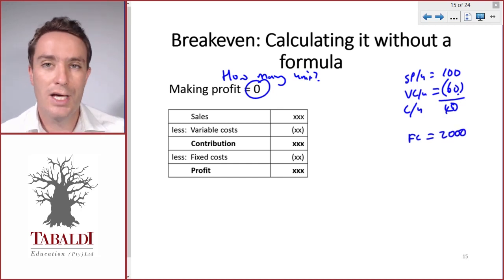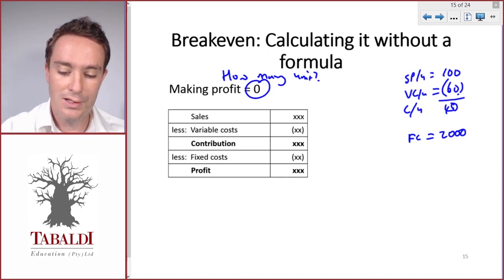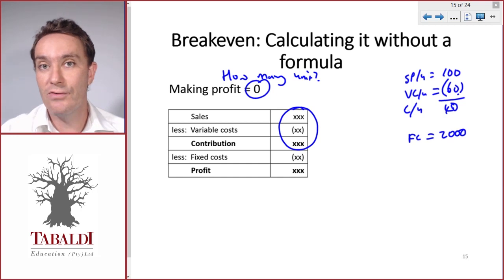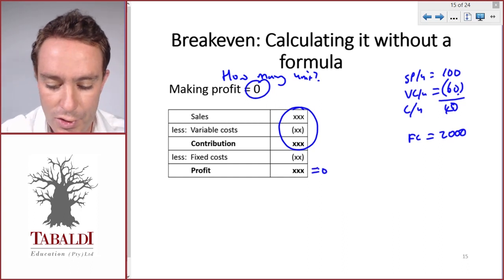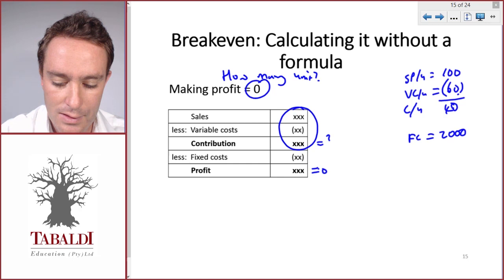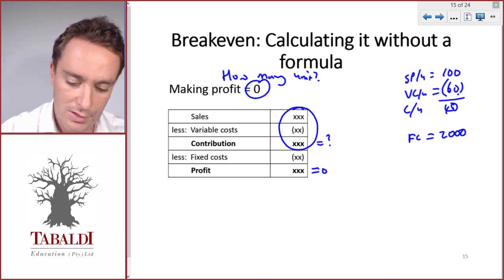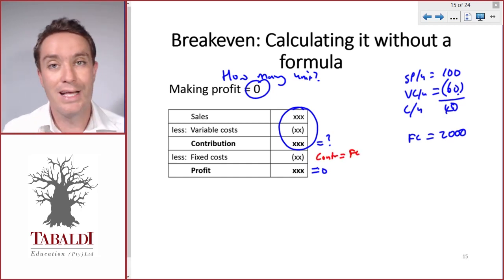How many units do we need to sell each month in order to break even? Or how many units do we need to sell in order for our contribution to cover our fixed costs or eliminate our fixed costs to leave a profit of zero? What should our contribution be for us to break even? It should be equal to our fixed costs. If contribution equals fixed costs, they will cancel out.